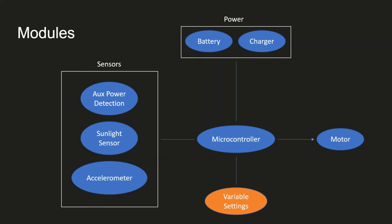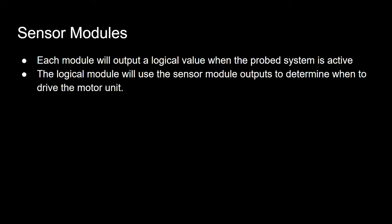Here is a diagram that shows how we are splitting up the modules, the two main modules being sensors and power. Each sensor module will output a logic value when the probe system is active. The logic module will use the sensor module outputs to determine when to drive the motor unit.